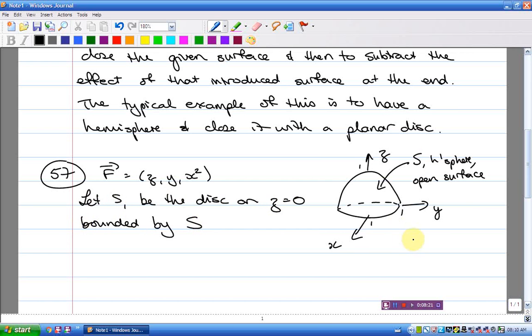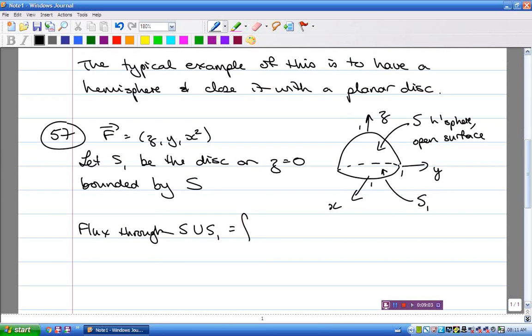So let S1 be the disc on Z equals 0 bounded by S. So S is the given hemisphere, S1 is that disc base. We know it's sitting on Z equals 0, which means that it's horizontal, so its normal is going to be very simple. We know it's got radius 1. The flux through S union S1 is equal to the triple integral over E. I haven't defined E. I'm going to write here E is the solid region. Div F dV.